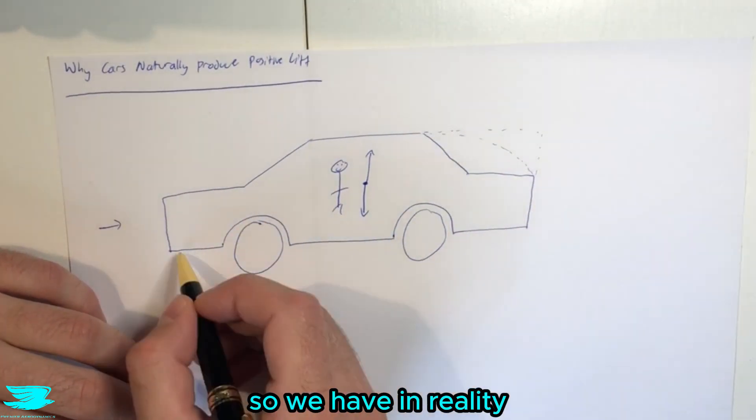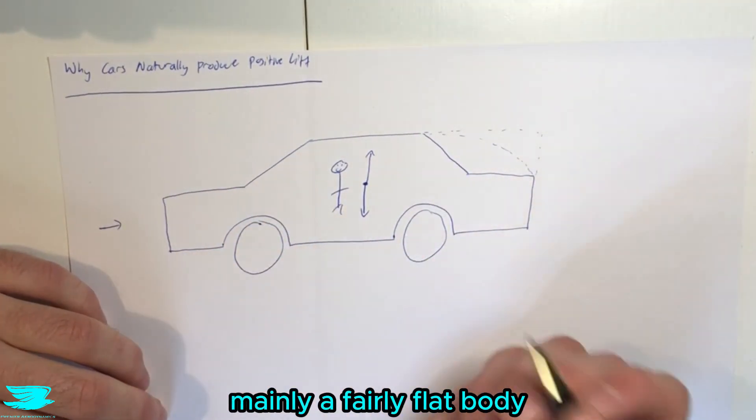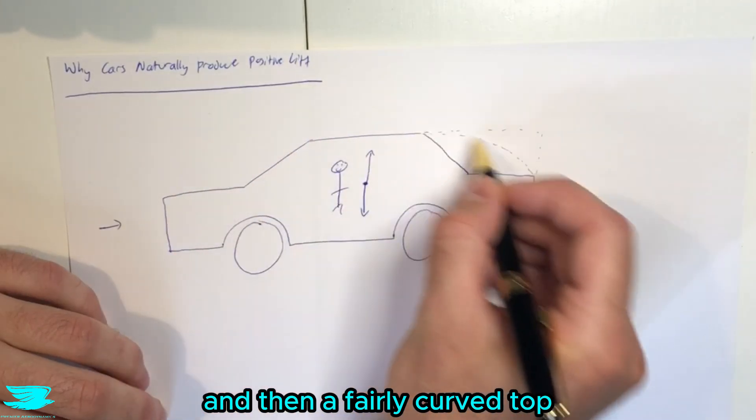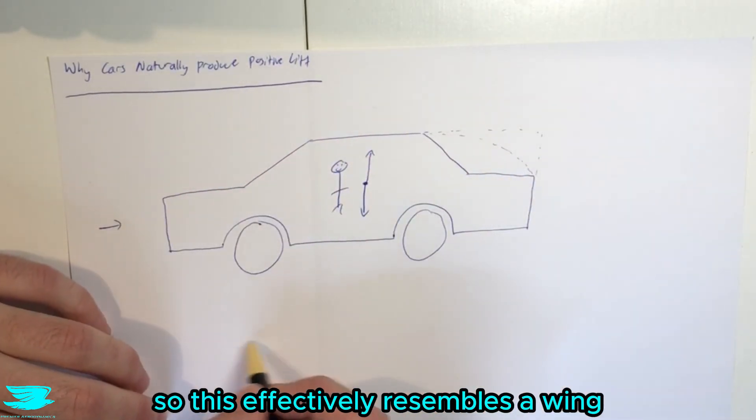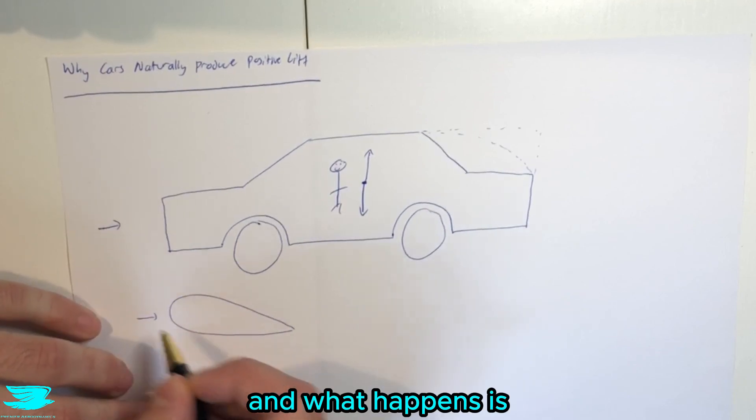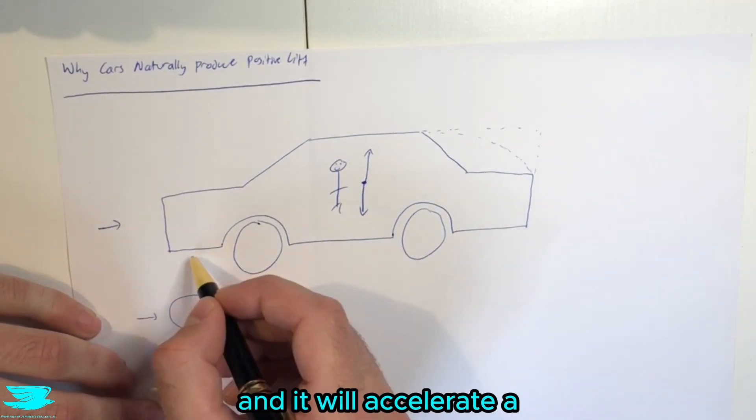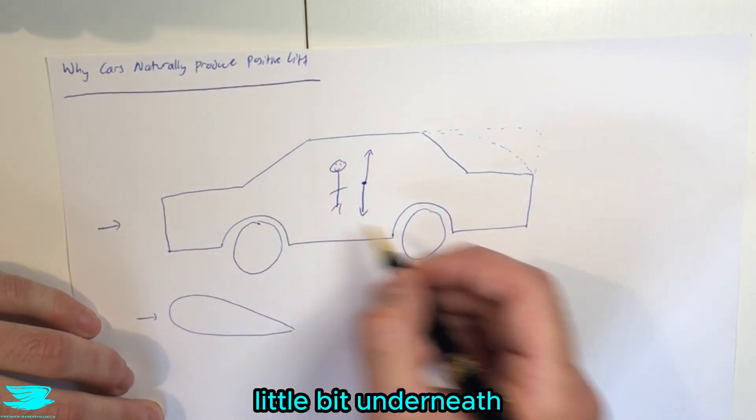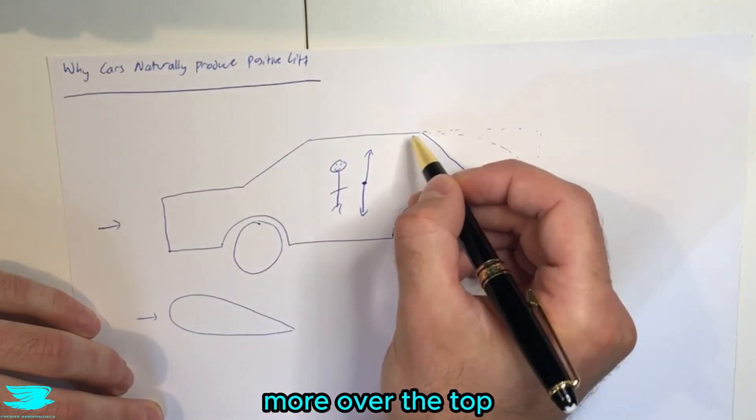So we have in reality, mainly a fairly flat body, and then a fairly curved top. So this effectively resembles a wing. And what happens is the flow comes here, and it will accelerate a little bit underneath, but it will accelerate a lot more over the top.